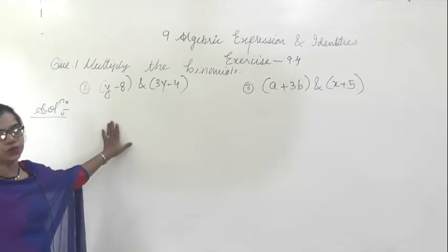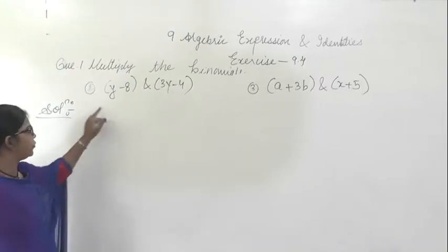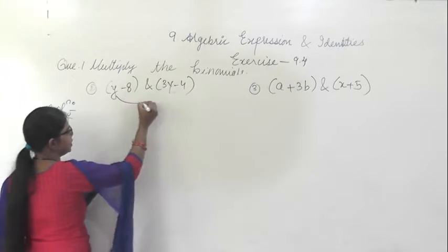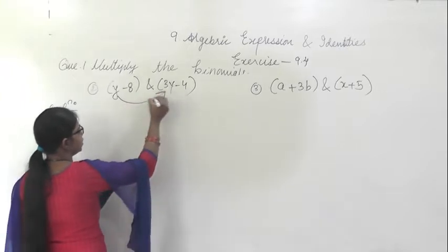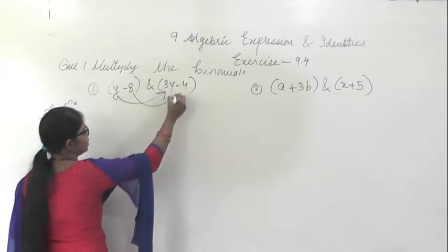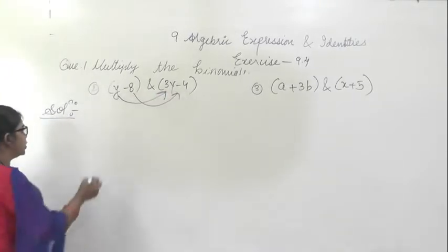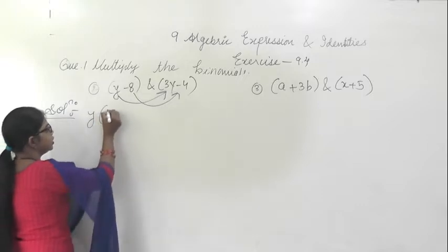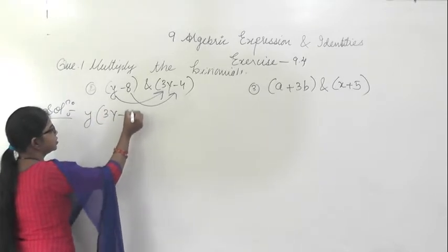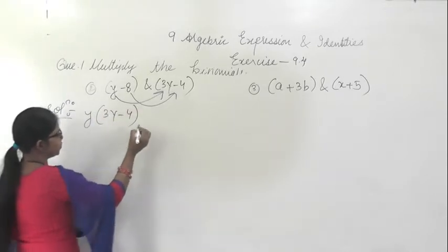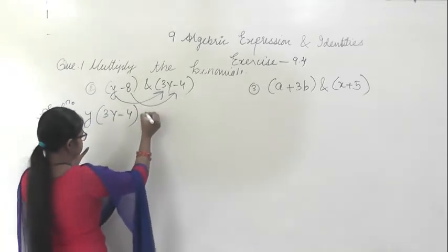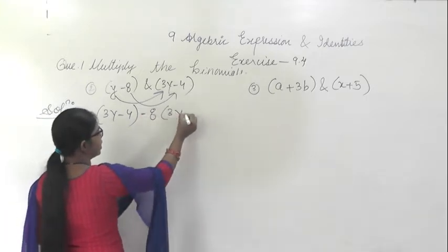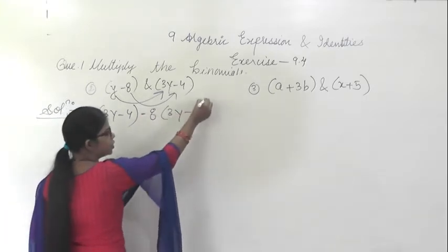This is question number 2. Here we have to multiply the binomial. First, this y will be multiplied with the whole term, then this 8 will be multiplied with the whole term.